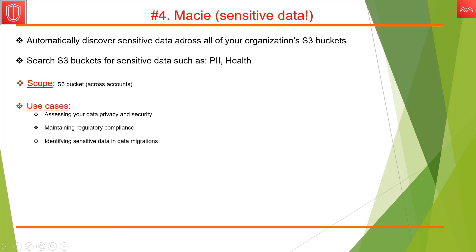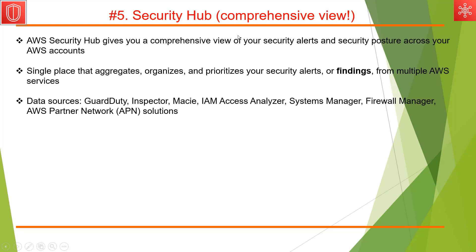The next service is Macie. It automatically discovers sensitive data across all of your organization's S3 buckets. It searches S3 buckets for sensitive data such as personally identifiable information or any health-specific information.